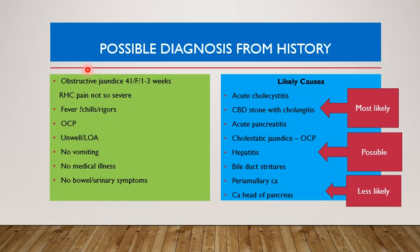From the history, the patient is a case of obstructive jaundice in a 41-year-old female for one to three weeks duration. The pain is not severe, associated with fever, and she has a history of oral contraceptive pills. The most likely diagnoses include acute cholecystitis, CBD stone with cholangitis, acute pancreatitis, cholestatic jaundice due to oral contraceptive pills, hepatitis, bile duct strictures, peri-ampullary tumour, and carcinoma of the head of pancreas. From the age and short onset, peri-ampullary carcinoma and carcinoma head of pancreas are very highly unlikely.